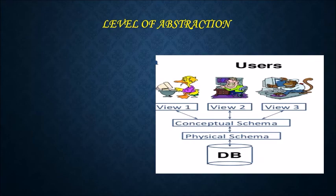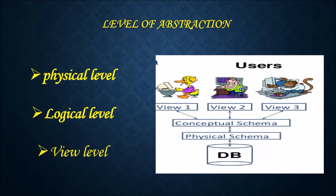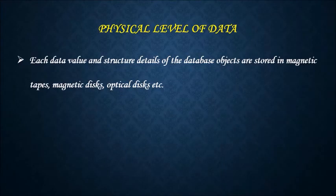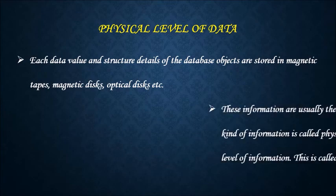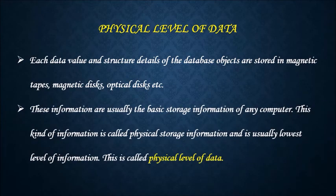Here levels of abstraction can be divided into three types: physical level, logical level, and view level. Let us see all of them. Each data value and structure details of the database objects are stored in magnetic tapes, magnetic discs, optical discs, etc. These informations are usually the basic storage information of any computer. This kind of information is called physical storage information and is usually the lowest level of information.